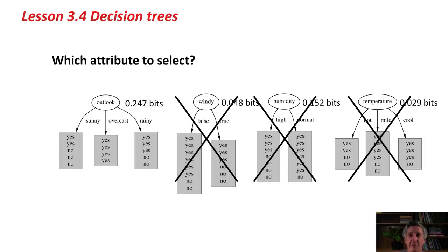We're going to choose the attribute that gains the most bits of information, and that, in this case, is Outlook. At the top level of this tree, the root node, we're going to split on Outlook.